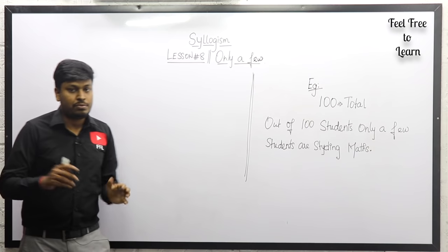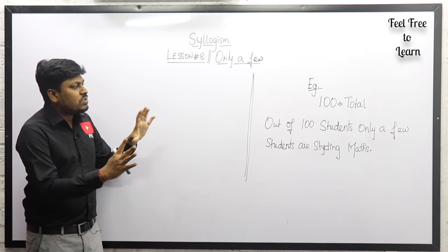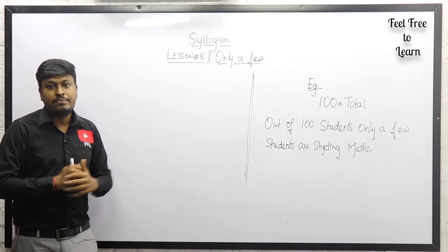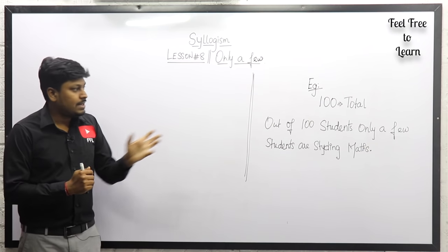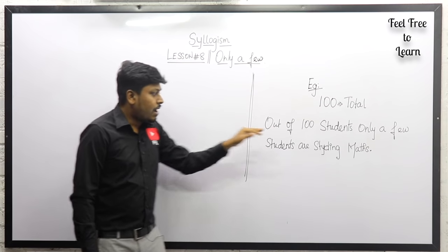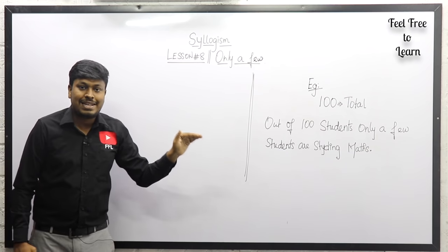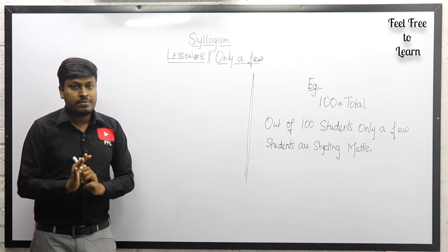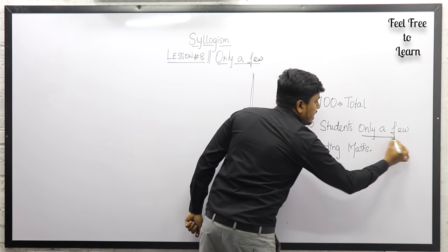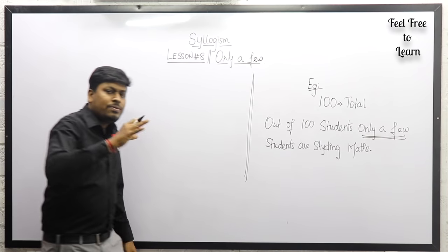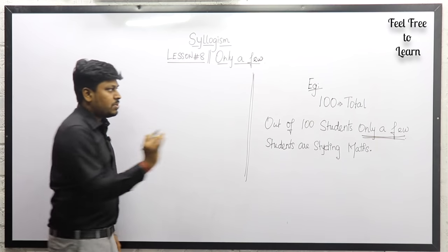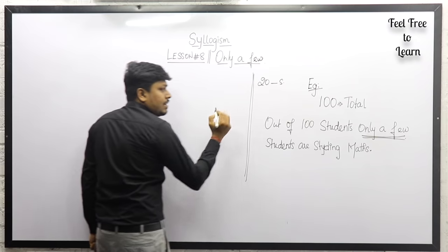Before solving questions based on 'only a few,' let me explain what 'only a few' means and how to implement this logic in syllogism. Here is an example: totally in a classroom there are 100 students, and out of 100 students, only a few students are studying mathematics. Let me assume that out of 100 students, 20 students are studying mathematics.